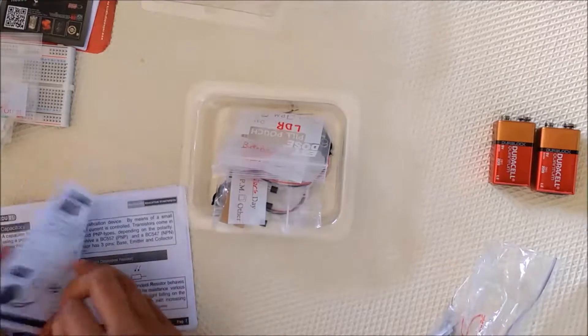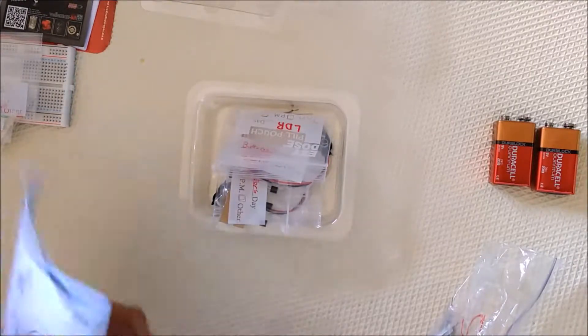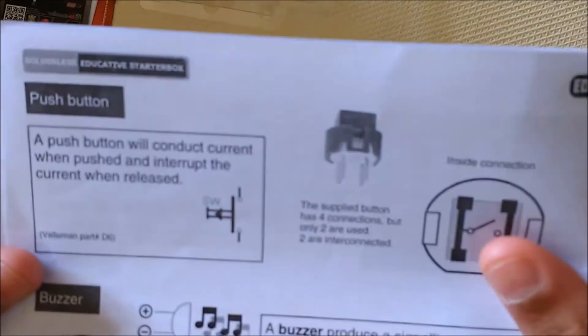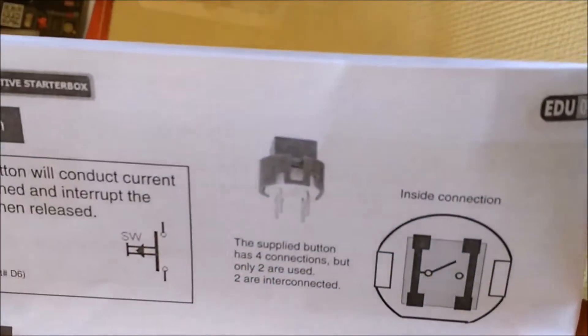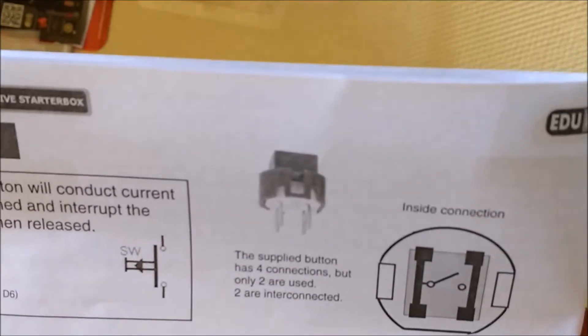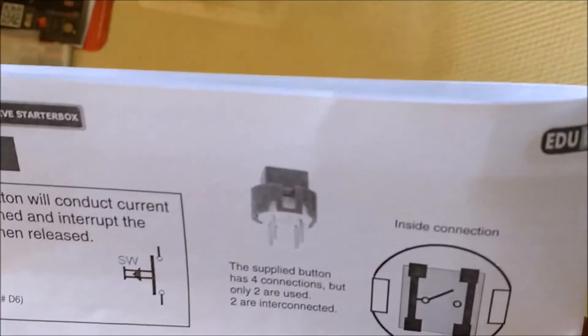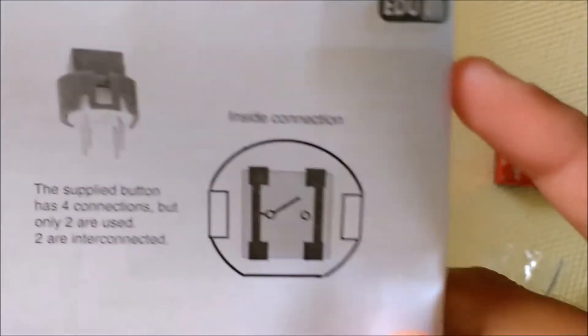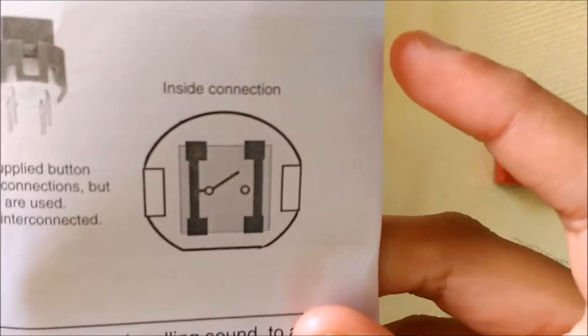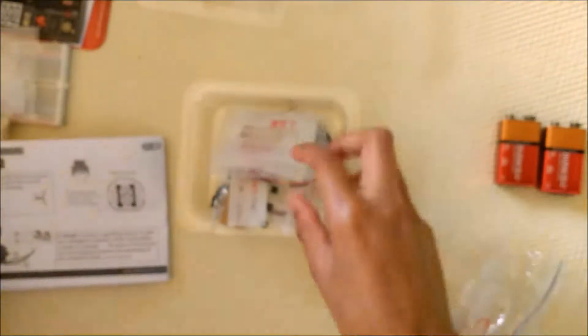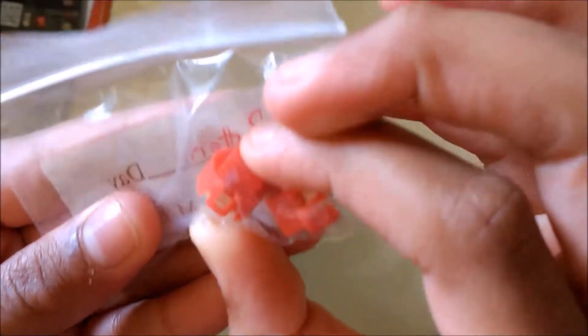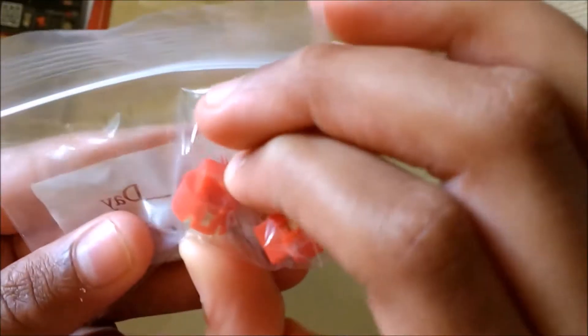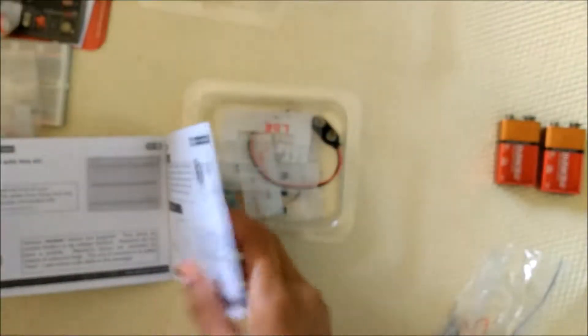Next part is push button, pretty self-explanatory. A push button will conduct current when pushed and interrupt the current when released. The supplied button has four connections but only two are used. You get two buttons. You can press them down and they make a little clicking noise.